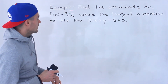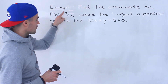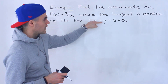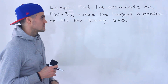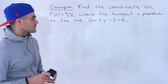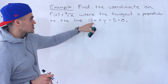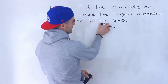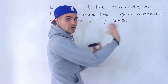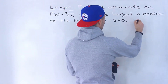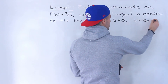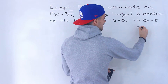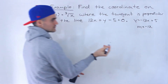In this question, what we're going to do is find the coordinate on this function, the third root of x, where the tangent is perpendicular to the line 12x plus y minus 5 equals zero. So the first thing I'm going to do is find the slope of this line by putting it into y equals mx plus b form. Isolating for y, we bring the 12x and the negative 5 over, giving us y equals negative 12x plus 5. So the slope for this line is negative 12.